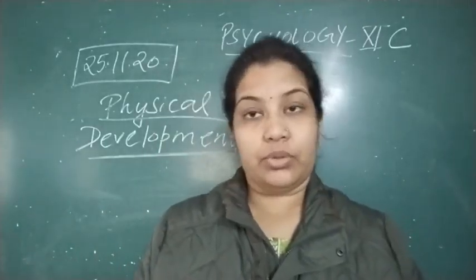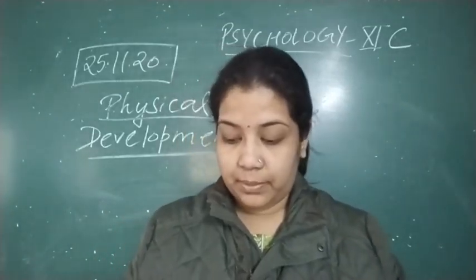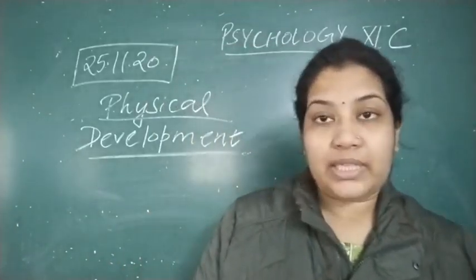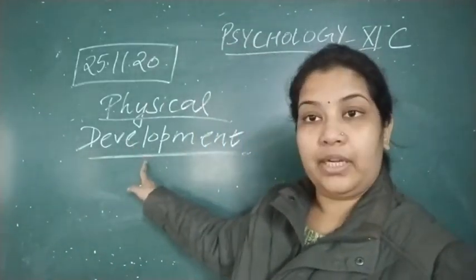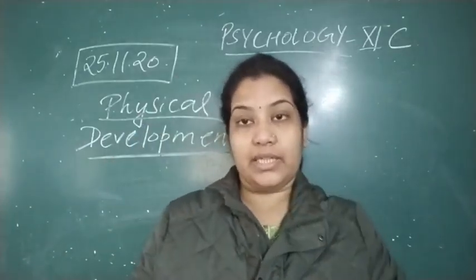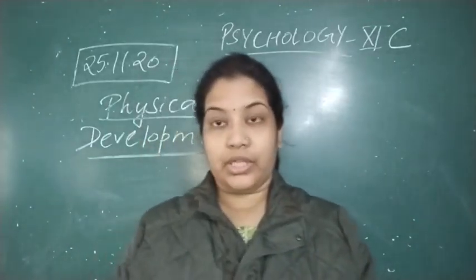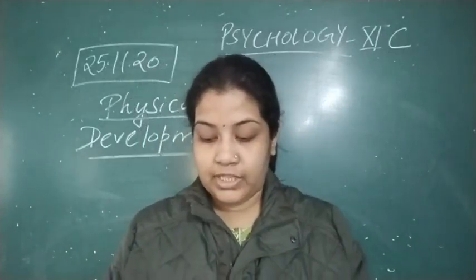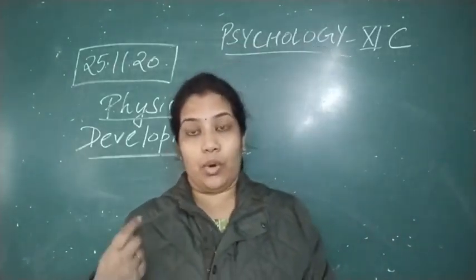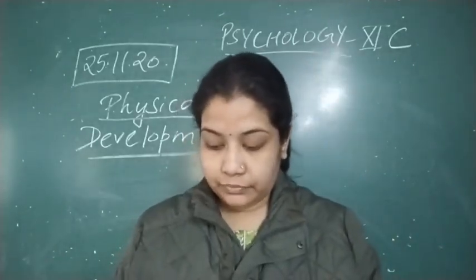However, puberty is not a sudden event but is part of a gradual process. Hormone release during puberty results in the development of primary and secondary sexual characteristics. In the adolescent stage, if we talk about physical development, two characteristics develop: primary and secondary sexual characteristics. Primary sex characteristics are directly related to reproduction, and secondary sex characteristics include features or signs of achieving sexual maturity.